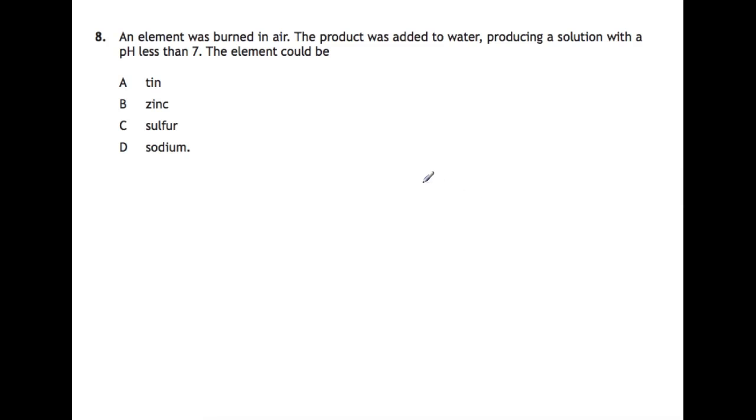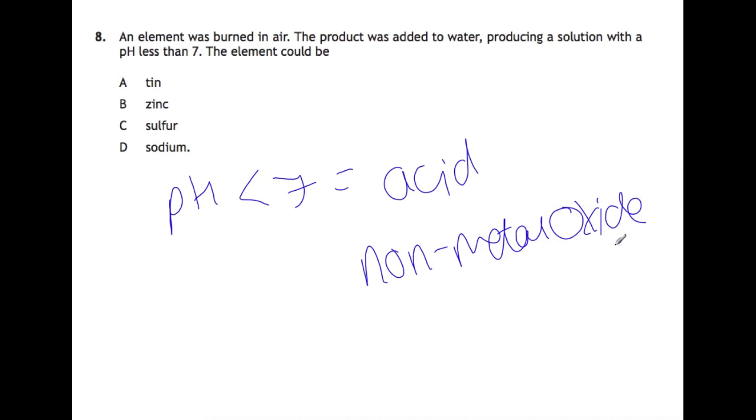Question 8. An element was burned in air. The product was added to water, producing a solution with a pH less than 7. So if you burn an element in air, you're going to get an oxide produced. If your oxide is then soluble, you can either produce an acid or an alkali. With a pH less than 7, that would be an acid, and would require a non-metal oxide. So that immediately means that you can ignore all of the metals in the options here, which is tin, zinc, and sodium, and leaves you with sulfur.